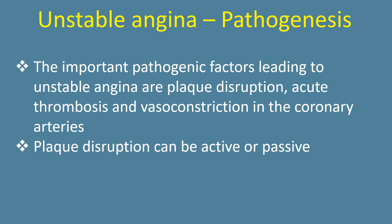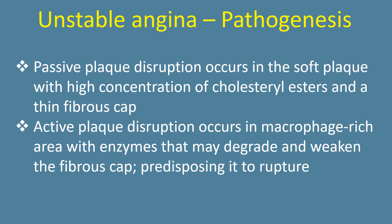Important pathogenetic factors leading to unstable angina are plaque disruption, acute thrombosis, and vasoconstriction in the coronary arteries. Plaque disruption can be active or passive. Passive plaque disruption occurs in the soft plaque with high concentration of cholesterol esters and a thin fibrous cap. Active plaque disruption occurs in macrophage-rich areas with enzymes that may degrade and weaken the fibrous cap, predisposing it to rupture.